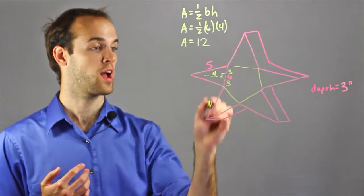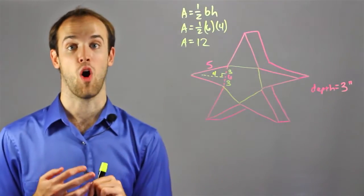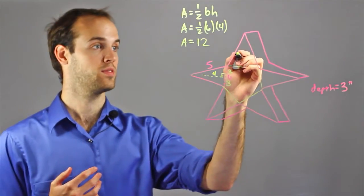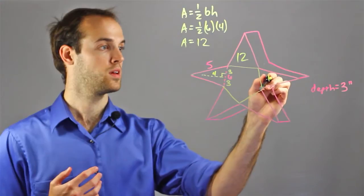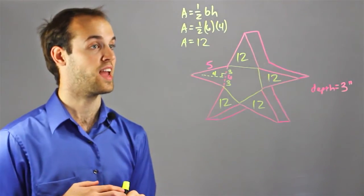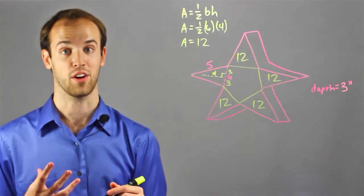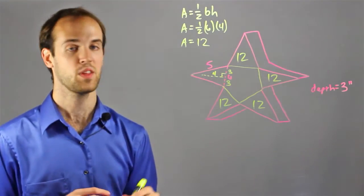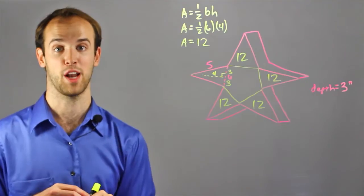So the area of one of these triangles is 12. That means that all of the triangles must be 12. Which means that the area of all the triangles together must be 60. So I'm going to keep that in mind, and I'm going to move on to my pentagon.